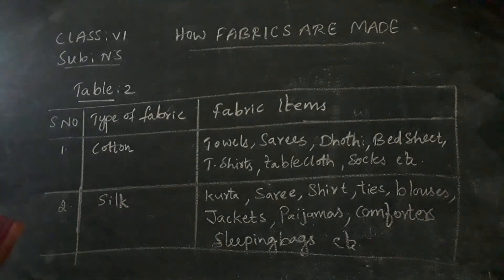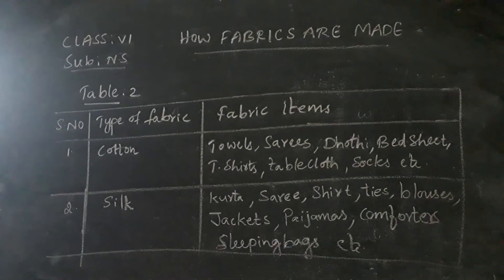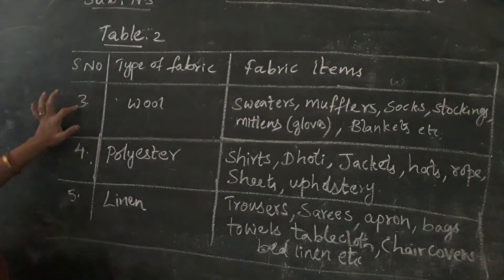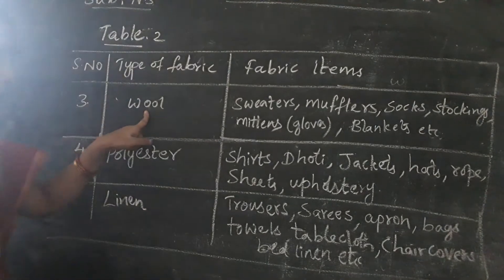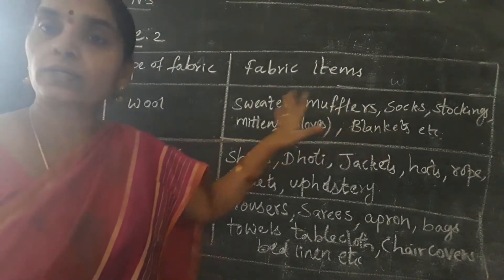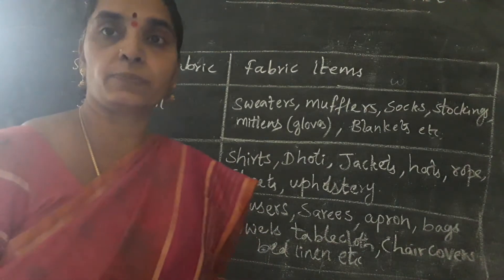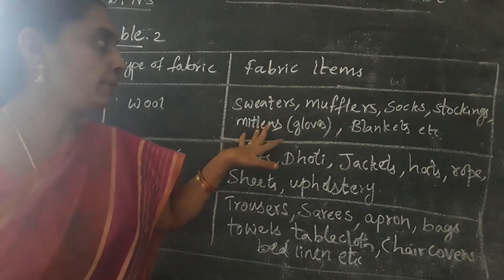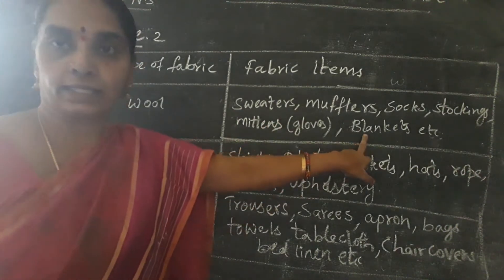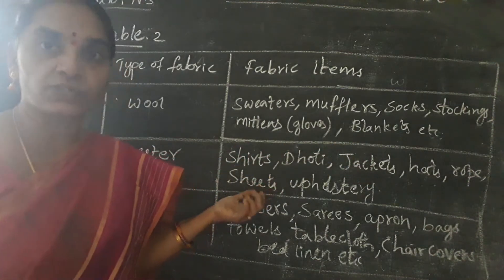Later I will move to the next fiber — wool. The woolen fabric is used for different items like sweaters, mufflers, socks, stockings, mittens (that is gloves), and blankets. Woolen blankets help protect us from cold during the extreme winter season.